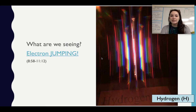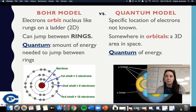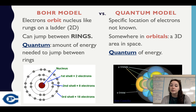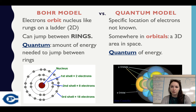What we're seeing essentially is electron jumping. We have two different models. The Bohr model is where electrons orbit the nucleus like rungs on a ladder — it's very 2D. The idea is that electrons can jump between these rings: first shell, second shell, third shell. To do this, we have to use a quantum — a quantum is the amount of energy needed to jump between these rings. That's the name we give for the energy required for the electron to jump.